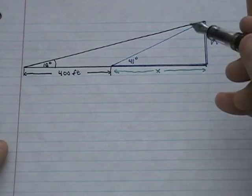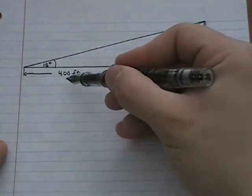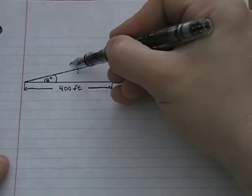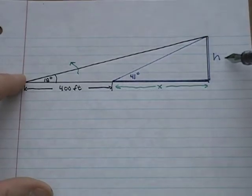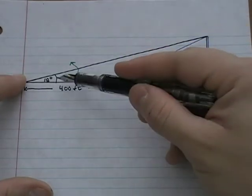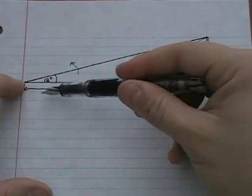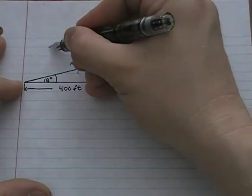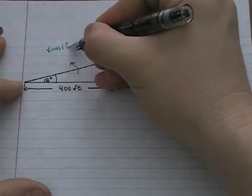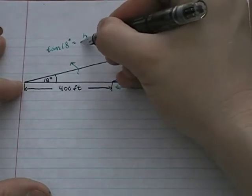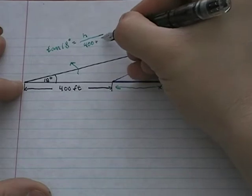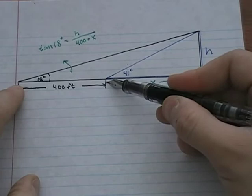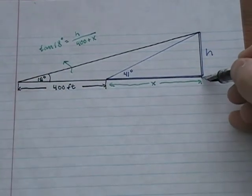I'll write an equation for the black triangle. I want to know the height h, which is opposite the angle, and the adjacent side is 400 plus x. Since we have opposite and adjacent, this is a tangent equation: tangent of 18 degrees equals h over (400 plus x).